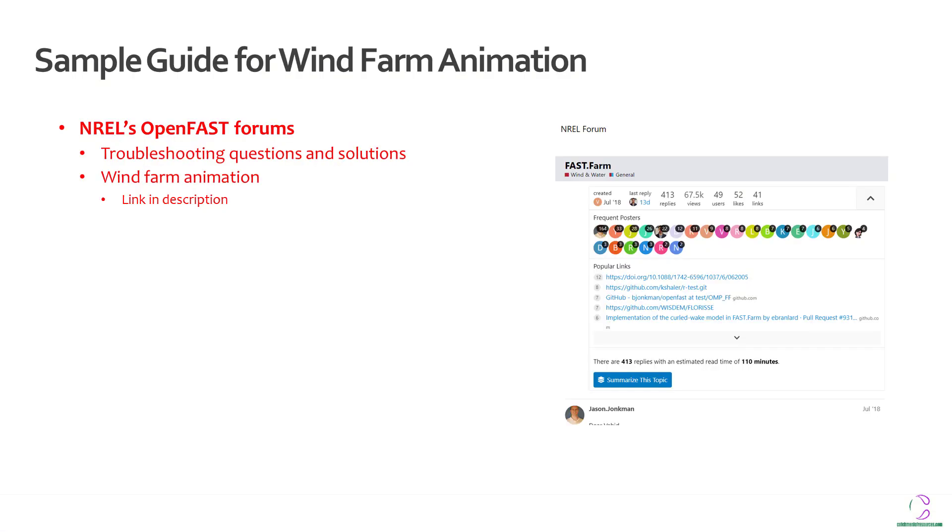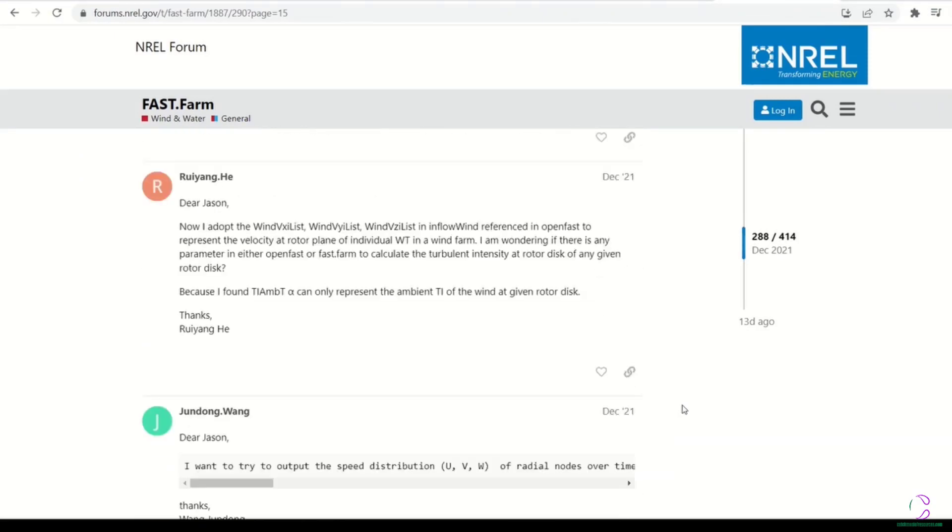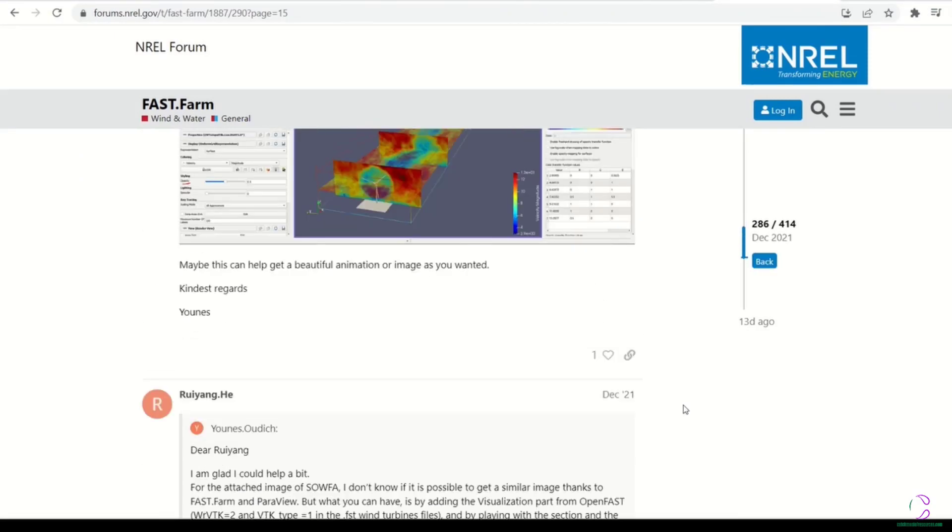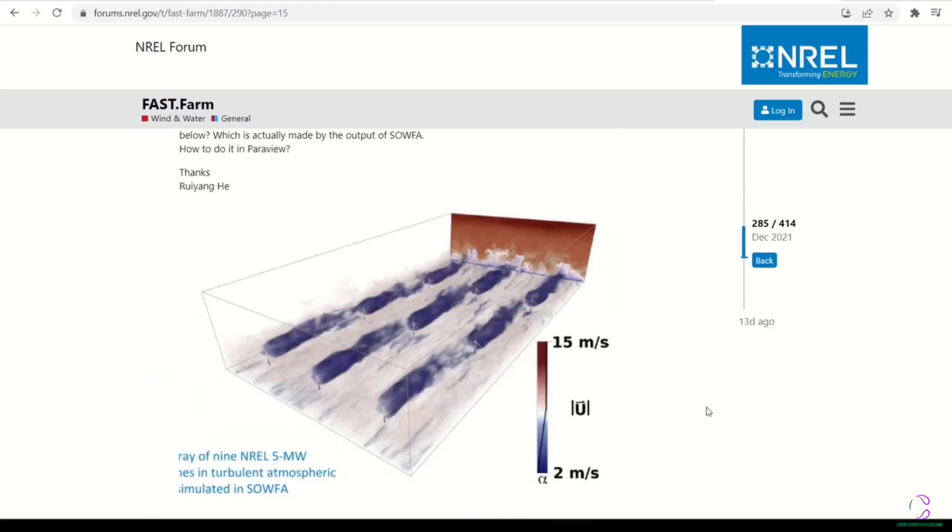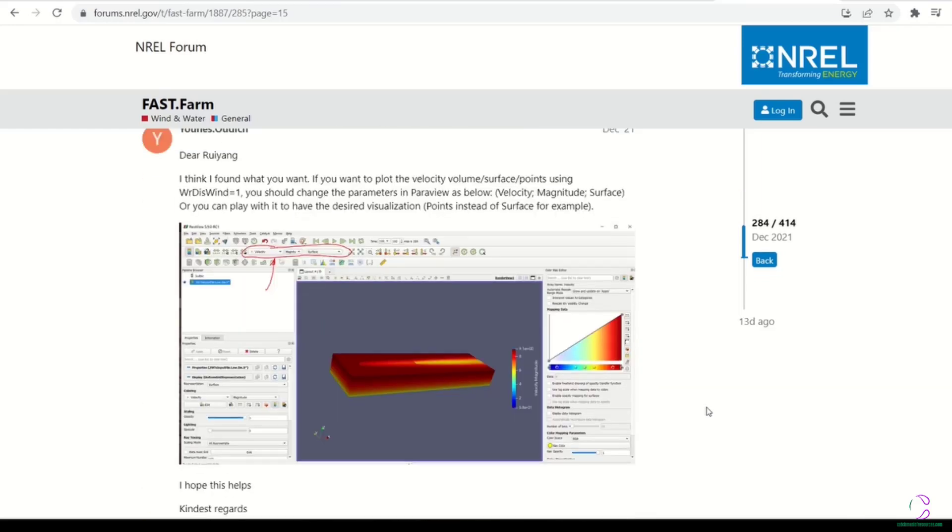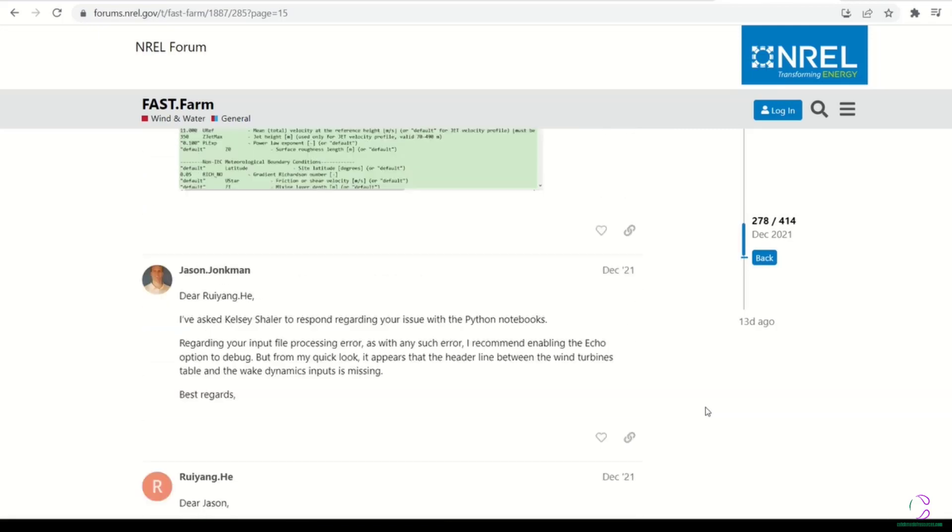So sample guide for wind farm animation. Because there is not so much information available in the documentation of how the animation should look, there is a forum on NREL's website which discusses animation of wind farms. There are several pages from which people can actually go through and learn how people have troubleshooted previous problems. As you look at the problems they've troubleshooted, it's possible to learn some things on how to generate your own wind farm animation.